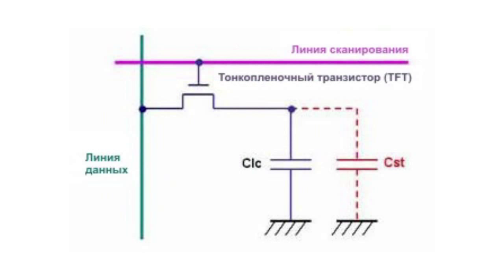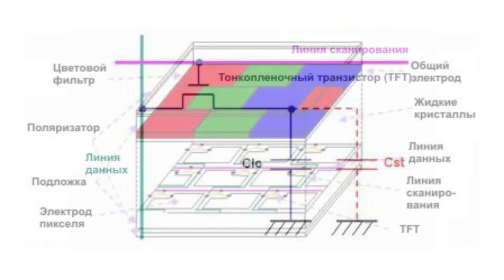TFT acts as a switch. The TFT gate lead is connected to the scan line, the source output is connected to the data line, and the drain output is connected to the CLC and the CST. When the gate is activated and selected in the scan line, the TFT channel opens and the image data will be recorded in the CLC and the CST. When the gate is not selected, the TFT channel is closed.